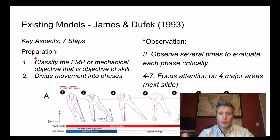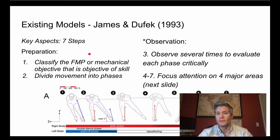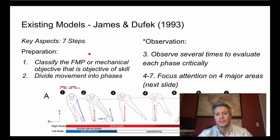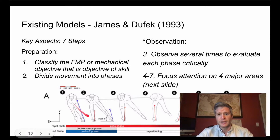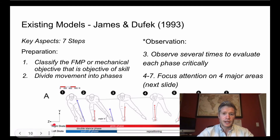In this model there are seven steps. It starts with preparation before you observe the skill: classifying the fundamental movement patterns or the mechanical objective of the skill — that's your biomechanics component. Then you divide the movement into phases. Using a speed skater here, you can see how you divide the movement looking at the left and right skate.